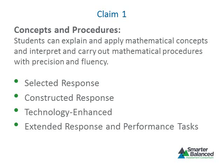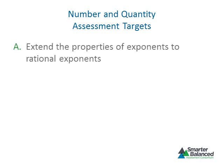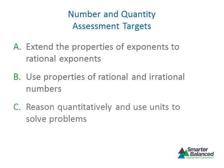Let's look at the assessment targets associated with each conceptual category. Three assessment targets have been defined for number and quantity. The first target builds on students' understanding of exponents and requires them to extend their properties to rational numbers by rewriting expressions using radicals and rational exponents. The second target requires students to use properties of rational and irrational numbers, including making generalizations about sums and products ranging from concrete to abstract. The third target focuses on the ability to reason quantitatively and use units to solve problems, requiring students to choose and interpret units in formulas and the scale in a graph.